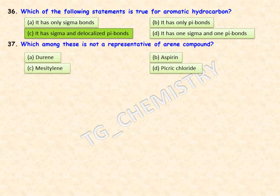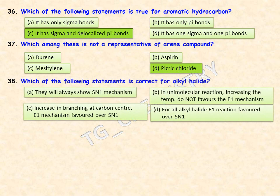Which among these is NOT a representative of aryne compounds? Among the four options given, picric chloride is the one which is not an aryne compound.